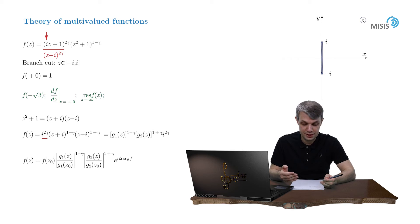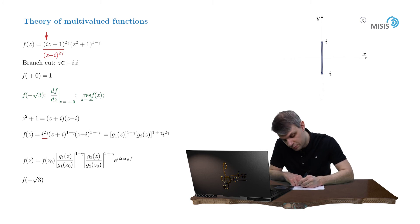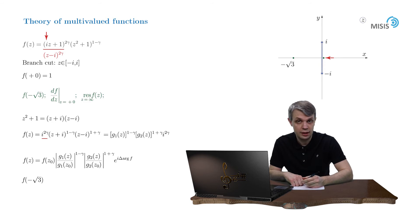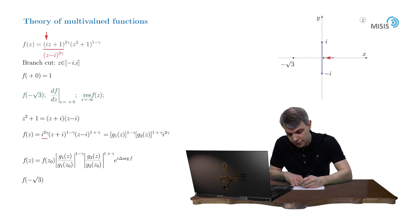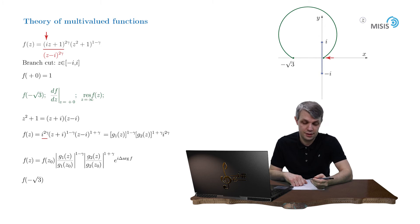Let's proceed and find the value of this function at point negative square root of 3. We draw our reference point plus 0, which is essentially 0 but on the right bank of our branch cut, and negative square root of 3, and connect them with some contour that circles around the branch cut from above. Let's trace the change of the arguments of the constituents of our function.